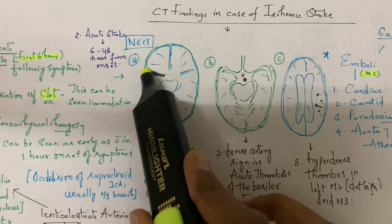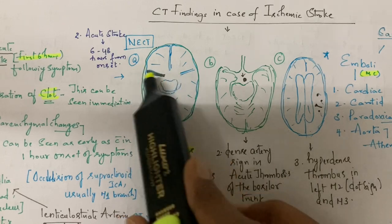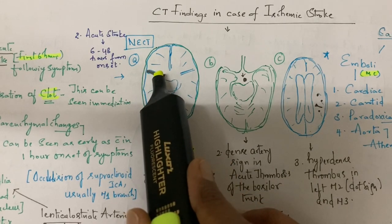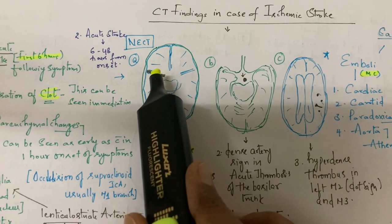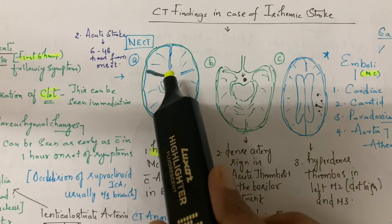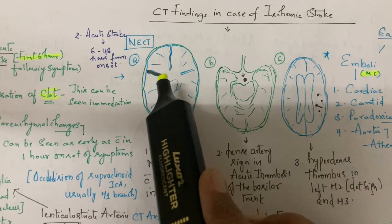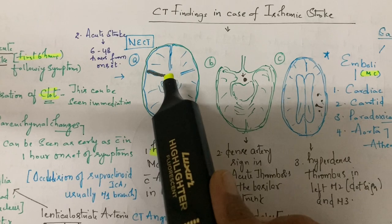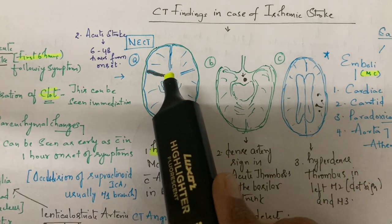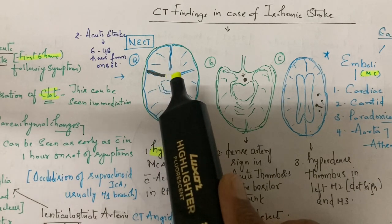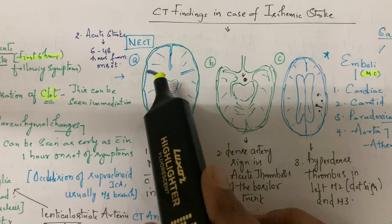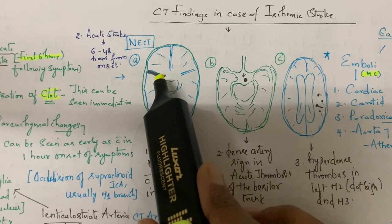But this emboli or thrombosis in the occluded vessel has HU of 100. Why? Because most emboli arise from cardiac or carotid sources. The clot is already present there for some time, so there is contraction of the clot and HU increases to 100.